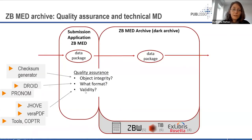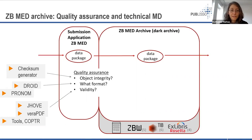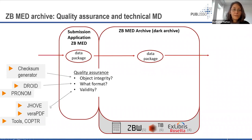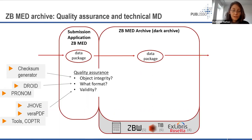We also check validity against the format specification of the file. This is possible when the format specification has been published and a validation tool exists. We use JHOVE, which can validate several different formats, and veraPDF, which validates PDF/A versions. If a format is not covered by JHOVE or veraPDF, you need to find an appropriate validation tool — there is a tool registry called COPTR, also populated by the digital preservation community.